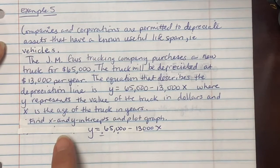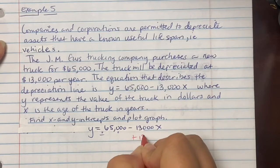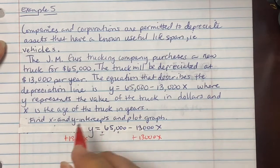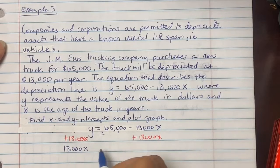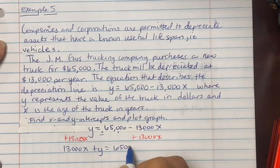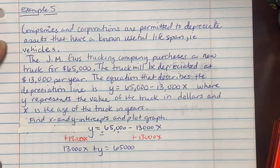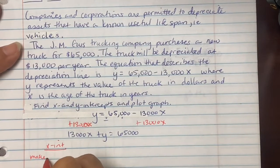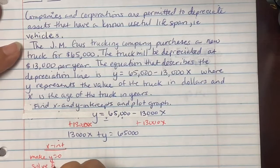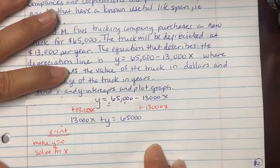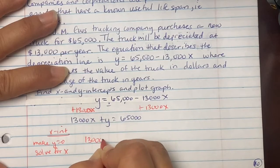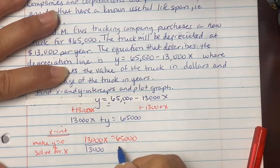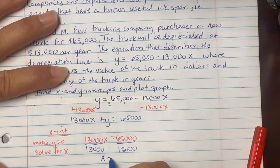I'm going to move the 13,000 over so that I'm in standard form. So now we see 13,000x + y = 65,000. It makes it easier to find your x and y intercepts. So remember, to find your x intercepts, you're going to make y equal to 0. Solve for x. So we get 13,000x equaling 65,000. Divide both sides by 13,000. So x equals 5.